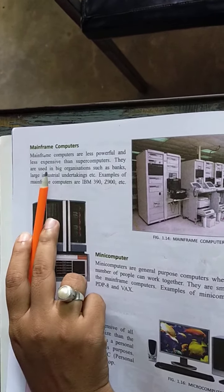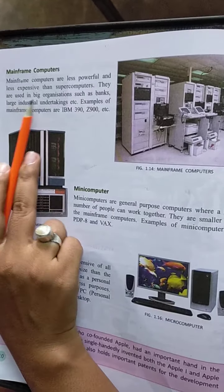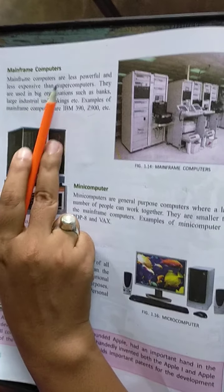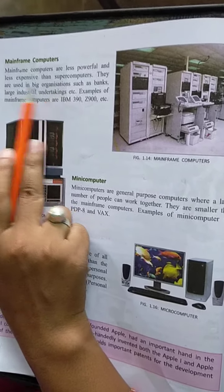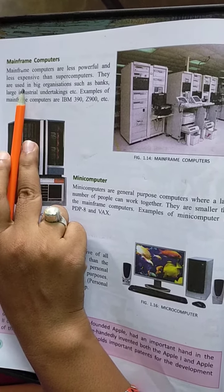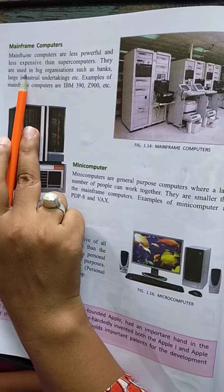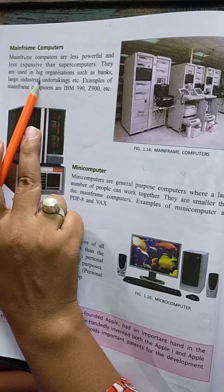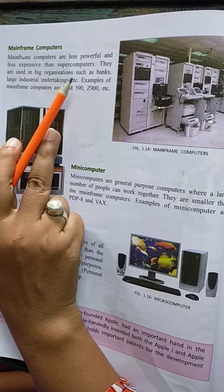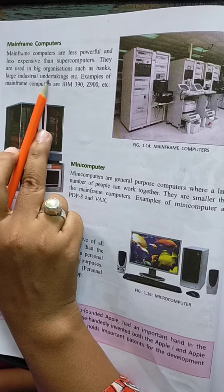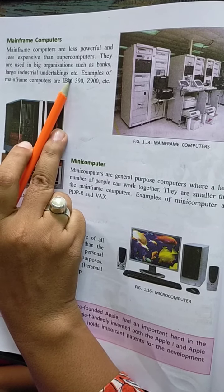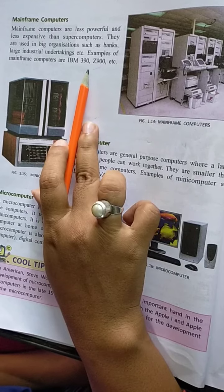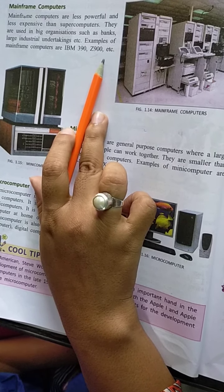Now, mainframe computers. What are mainframe computers? Mainframe computers are less powerful and less expensive than supercomputers. They are used in large organizations such as banks and large industrial undertakings. Examples of mainframe computers are IBM 390 and Z900.